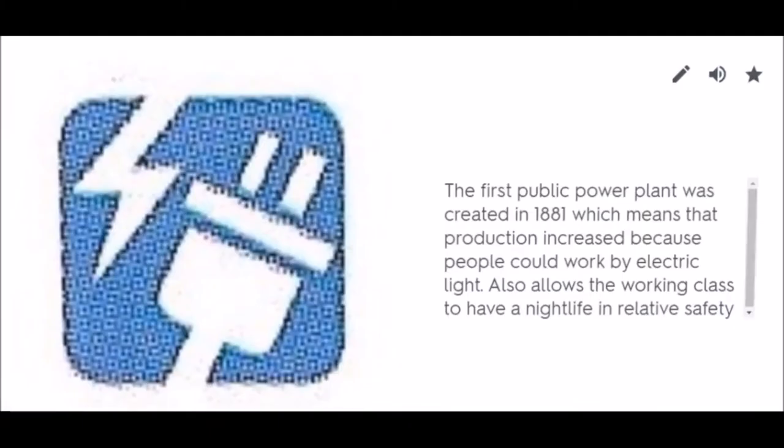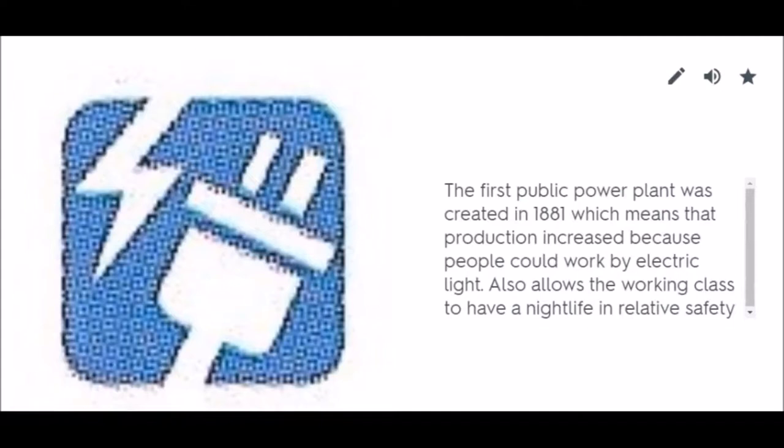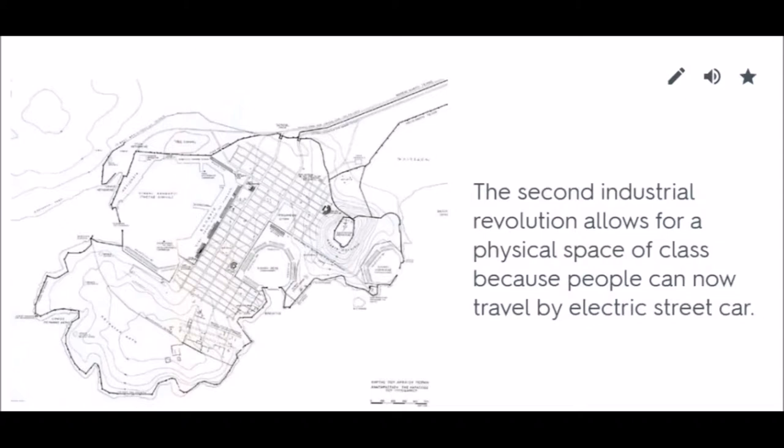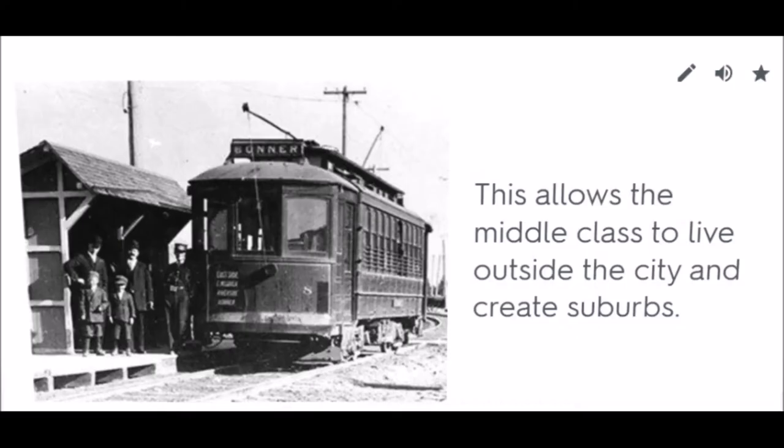Work by electric light allows the working class to have a nightlife in relative safety. Urban Planning: The second industrial revolution allows for a physical separation of class because people can now travel by electric street car. This allows the middle class to live outside the city and create suburbs.